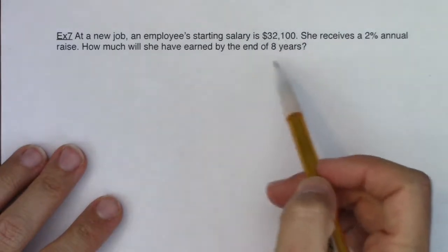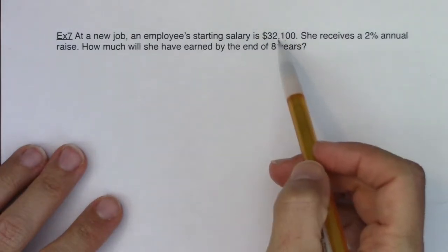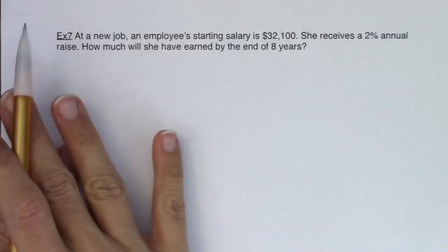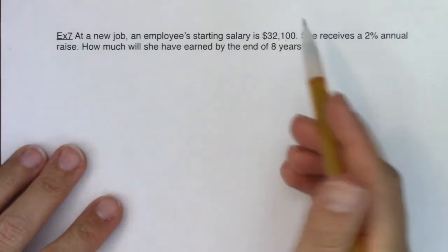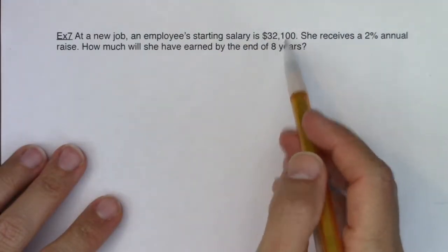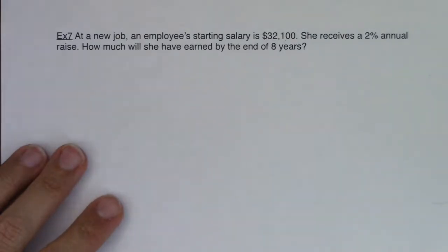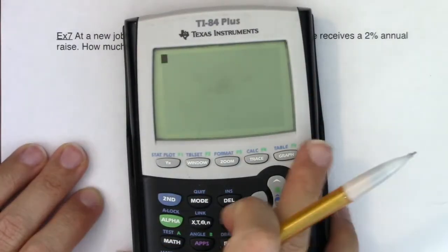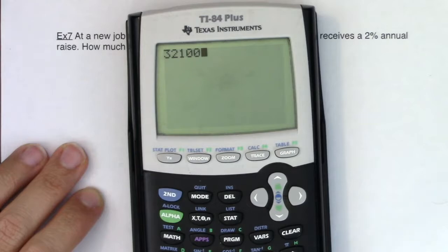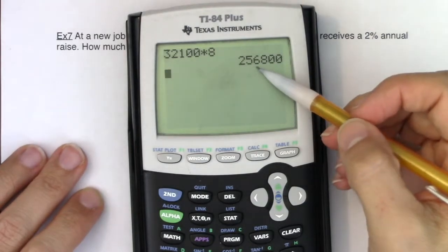So let's get a quick guesstimate of what she would get. Let's pretend that she wouldn't receive any raise at all. So she would make $32,100 all eight years. Then at the end of the eight years, how much would she have had if she made $32,100 times eight? She would have $256,800.